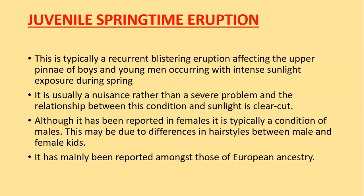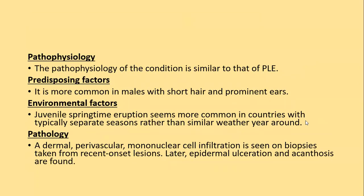The second disease to discuss is juvenile spring eruption. This is typically a recurrent blistering eruption affecting the upper pinnae of boys and young men, occurring with intense sunlight exposure during spring. It is more of a nuisance rather than a severe problem and the relationship with sunlight is quite clear-cut. Although it has been reported in females, it is typically a condition of males, due to differences in hairstyles. It has mainly been reported among those of European ancestry. The pathophysiology is similar to polymorphic light eruption; the predisposing factor is being male with short hair and prominent ears. It appears more common in countries with distinct seasons.